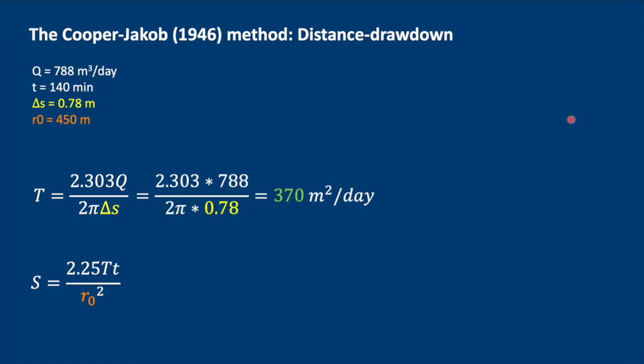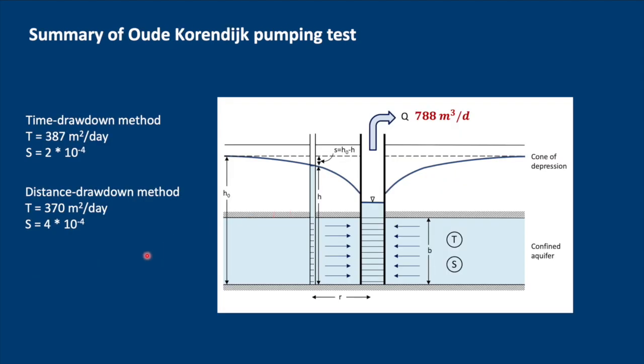As with the time-drawdown method we need to calculate the transmissivity first and then plug it into the equation for storativity. We get 4 times 10 to the minus 4 and 370 which is a little bit less than what we got for the time-drawdown method. Now we only have two data points for the distance-drawdown method which is not very good, so it's better if we use the data from the time-drawdown method to calculate our actual parameters. 387 meters squared per day we can round that up to 390, and we'll use the storativity of 2 times 10 to the minus 4.